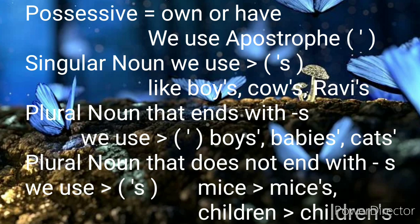Quick recap: possessive means own or have. We use an apostrophe. There are some rules: in a singular noun we use an apostrophe S, like boy's, cow's, Rabbi's. In a plural noun that ends with S we use an apostrophe, like boys', babies', cats'. In a plural noun that does not end with S we use an apostrophe S, like mice's, children's. I hope you have understood this topic. Thank you.